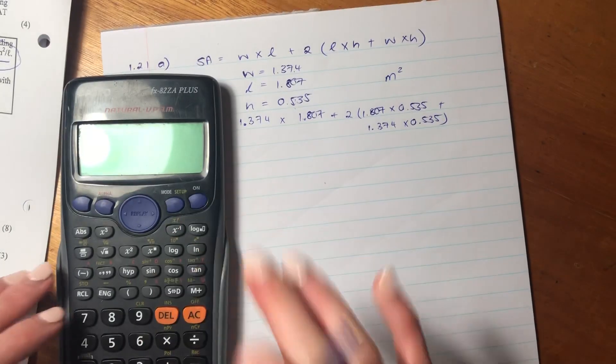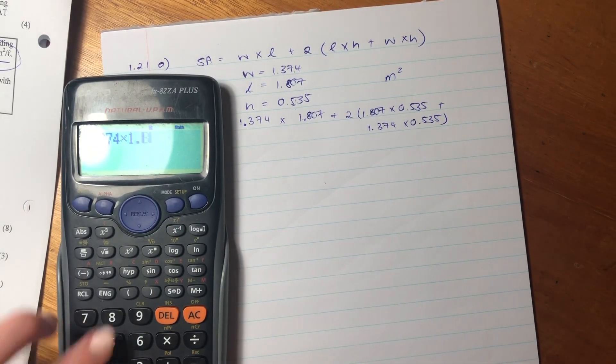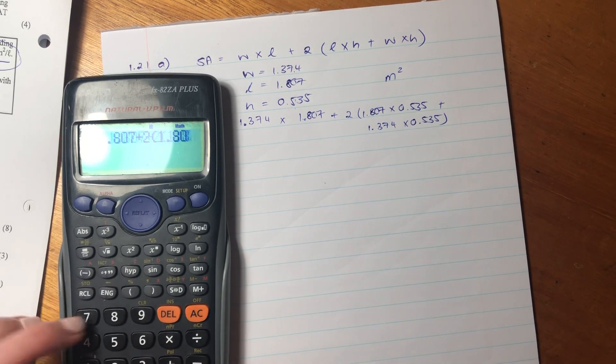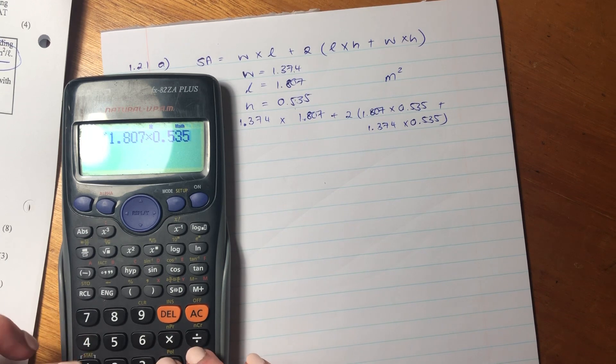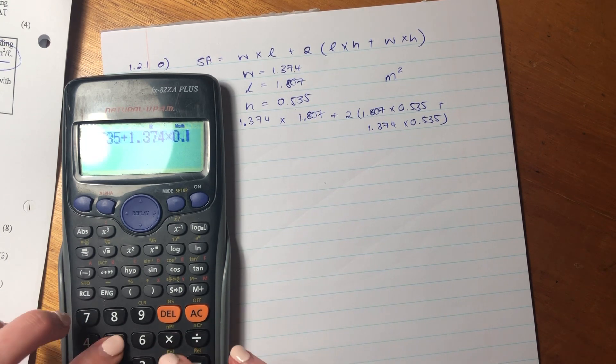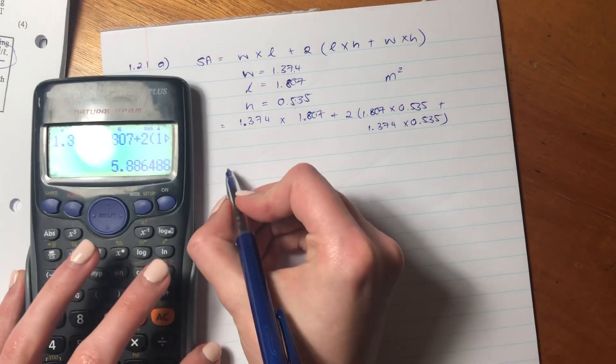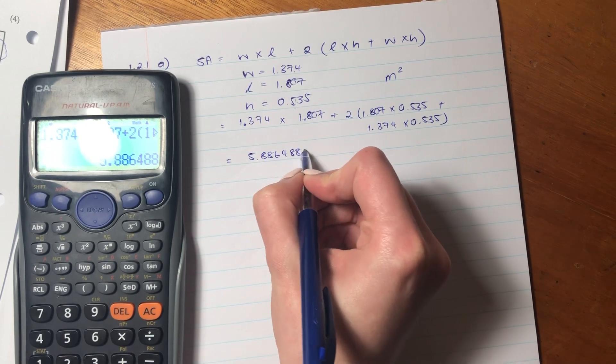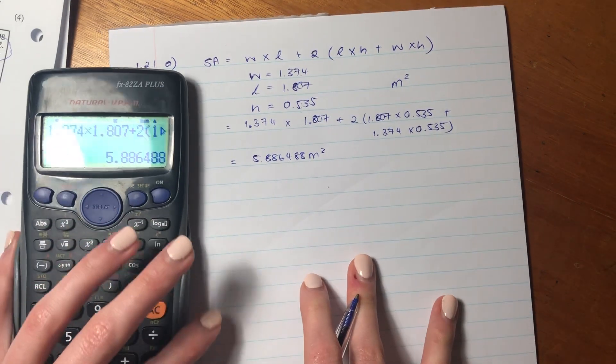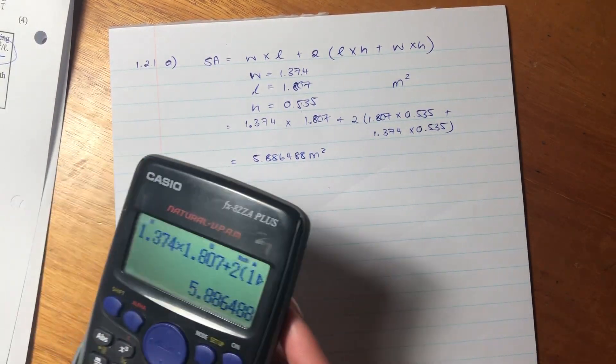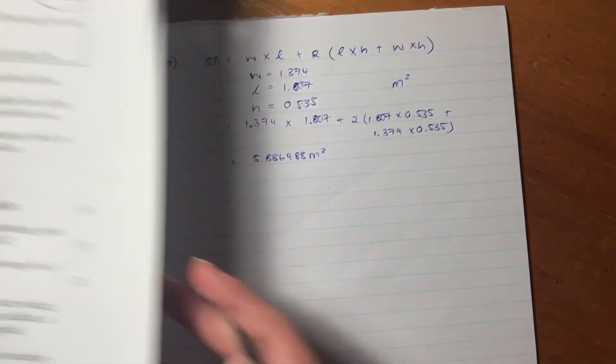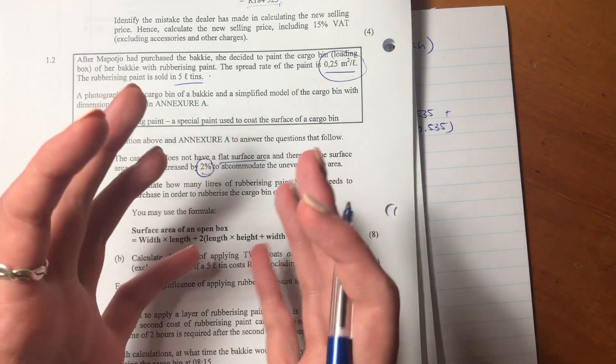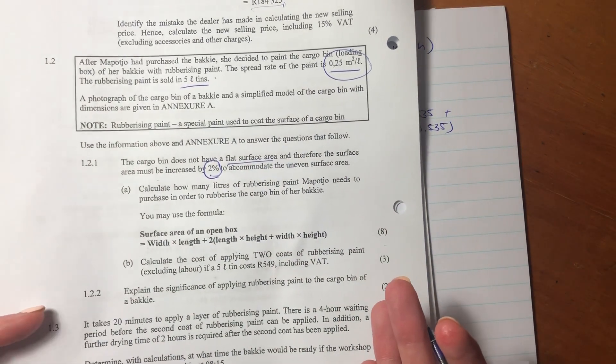Now all we have to do, put that into our calculator. Big thing here, and I know I say this often, but make sure that you substitute it in correctly, because it's very easy to make a mistake. I'm sure you've seen numerous times when I've made a mistake. So let's just make sure we do that correctly. So the surface area, we have 5.886488 meters squared. Don't round it off right now, because this is not our final answer.